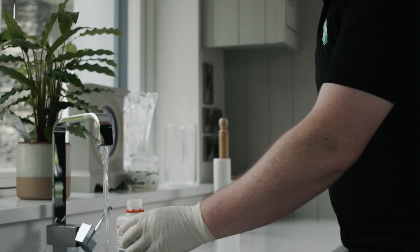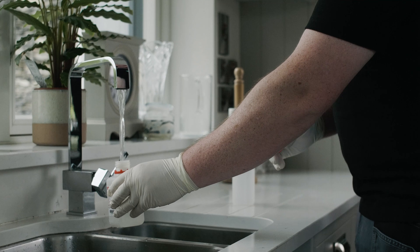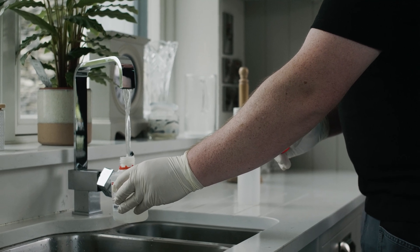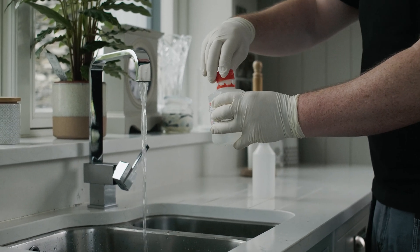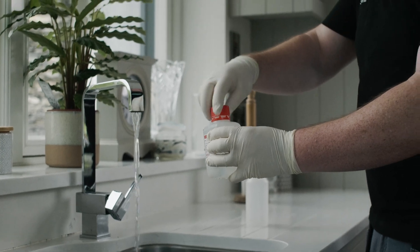Step 4. Place the sterile red cap bottle under the tap being careful not to touch the inside of the bottle or cap. Fill the bottle leaving a small air gap and replace cap securely.